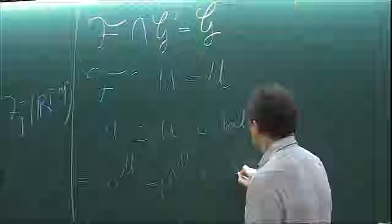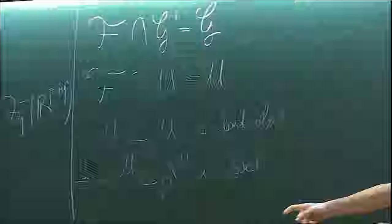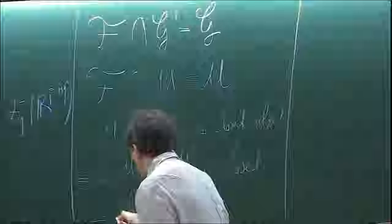And now it's the end of the argument. You have a closed subset inside a compact set, so it is compact as well. This implies that gamma mod U is compact.